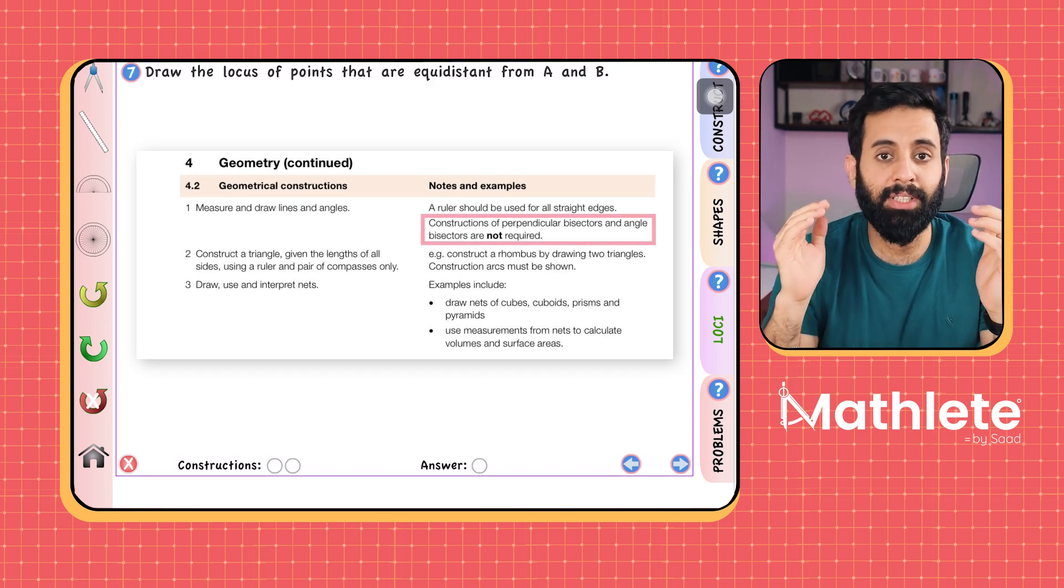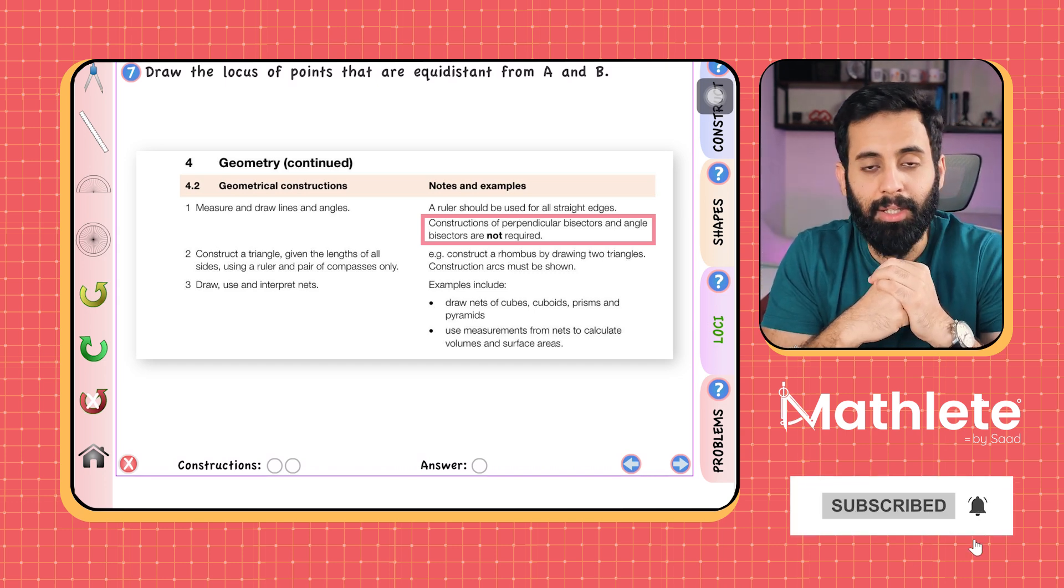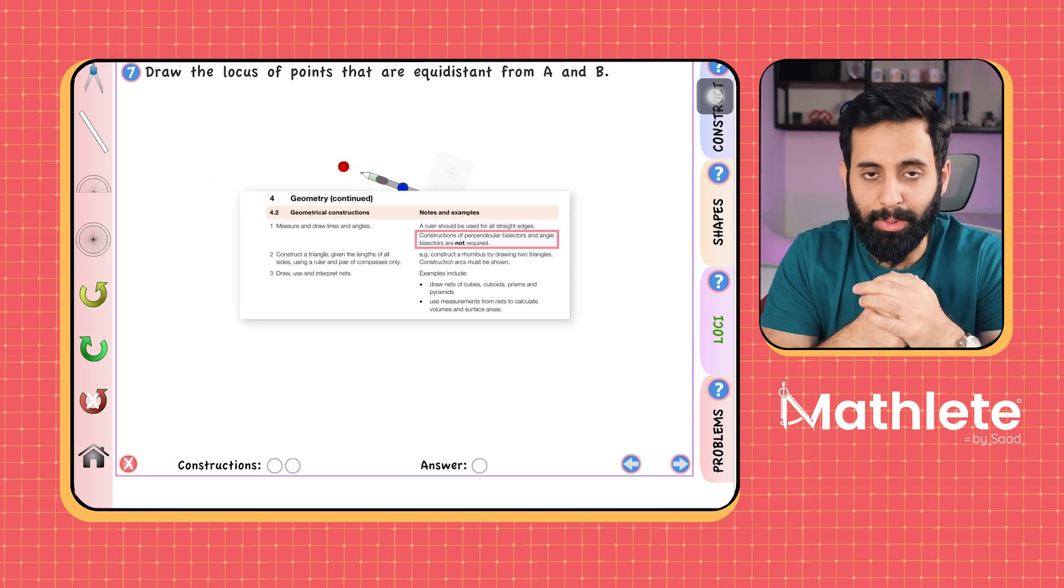Now, perpendicular bisector and angle bisector are no longer part of the official syllabus. I'll attach a screenshot you can see for yourself. Then obviously, the question is, why are we doing it?